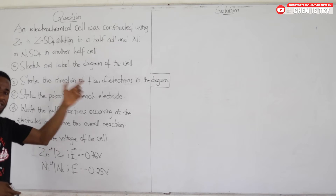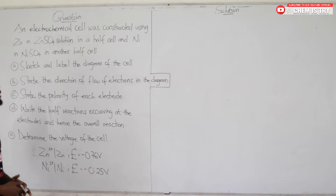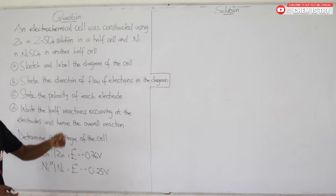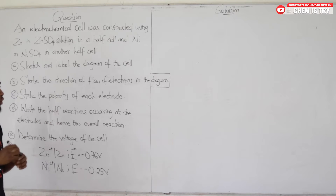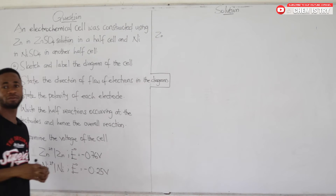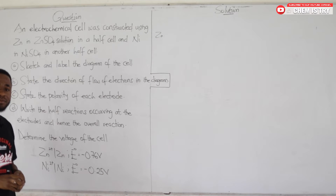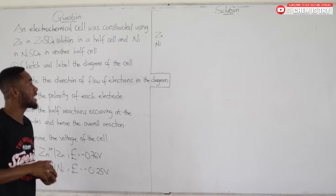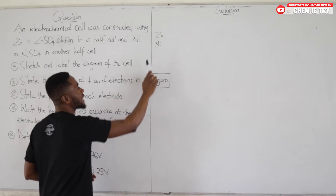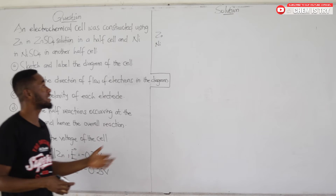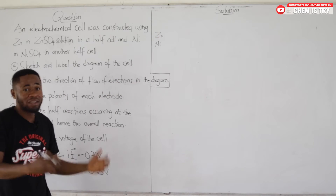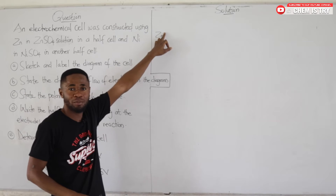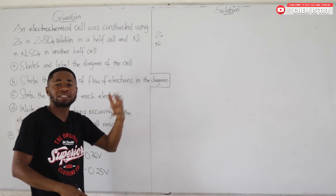One way is by using the electrochemical series. From the electrochemical series, Zn is for zinc and Ni is for nickel. It is evident that zinc is above nickel in the electrochemical series, which means zinc will have to lose electrons and nickel will not lose any electrons. So in this setup, zinc is going to act as the site of oxidation, which we call the anode, and nickel is going to serve as the site of reduction, which is called the cathode.